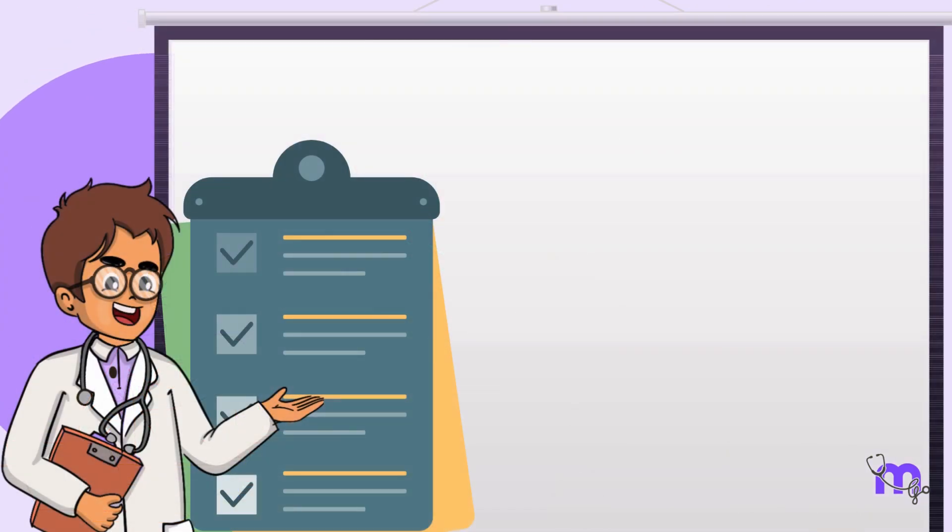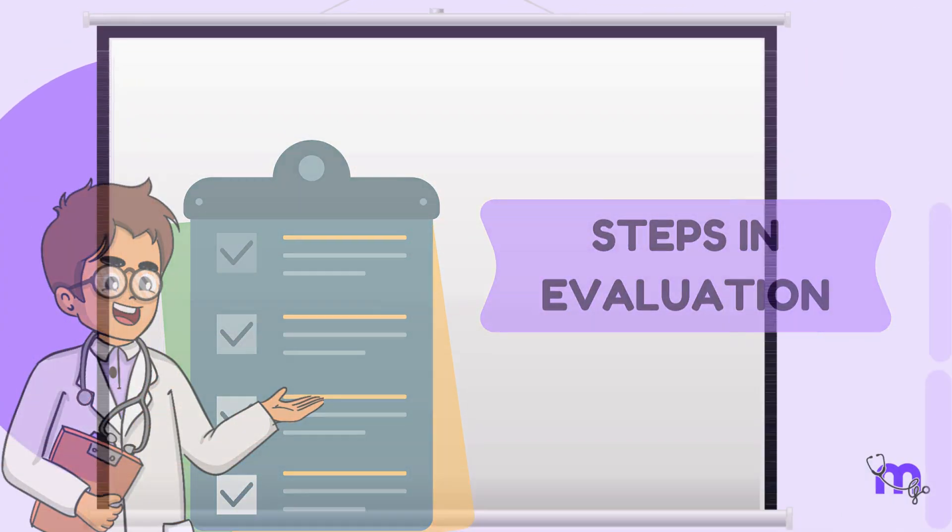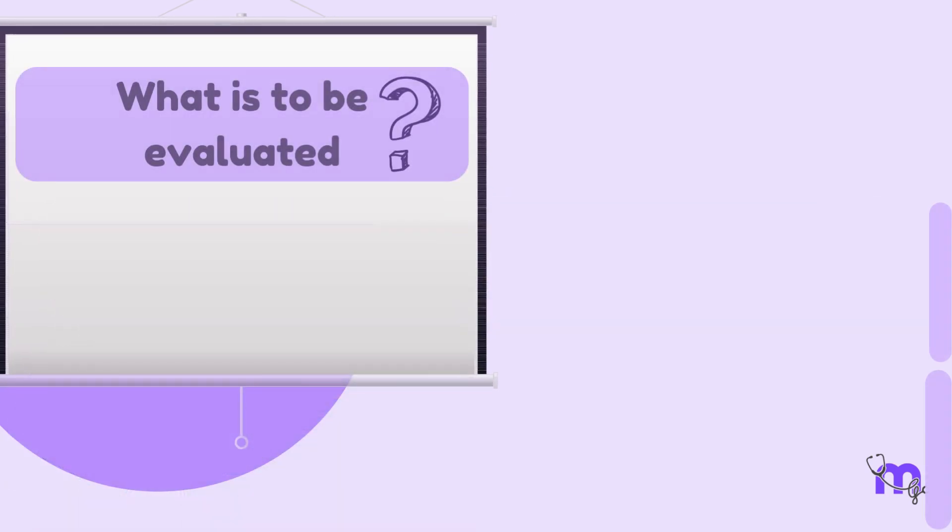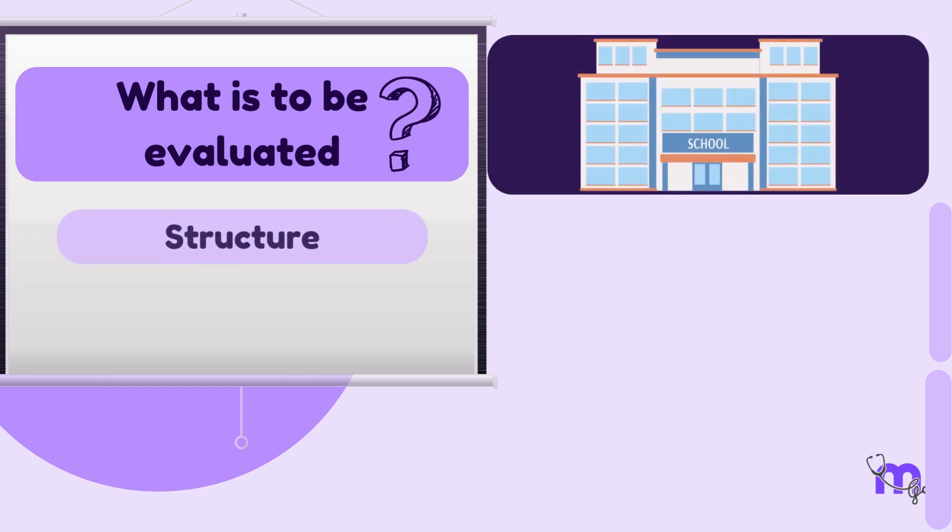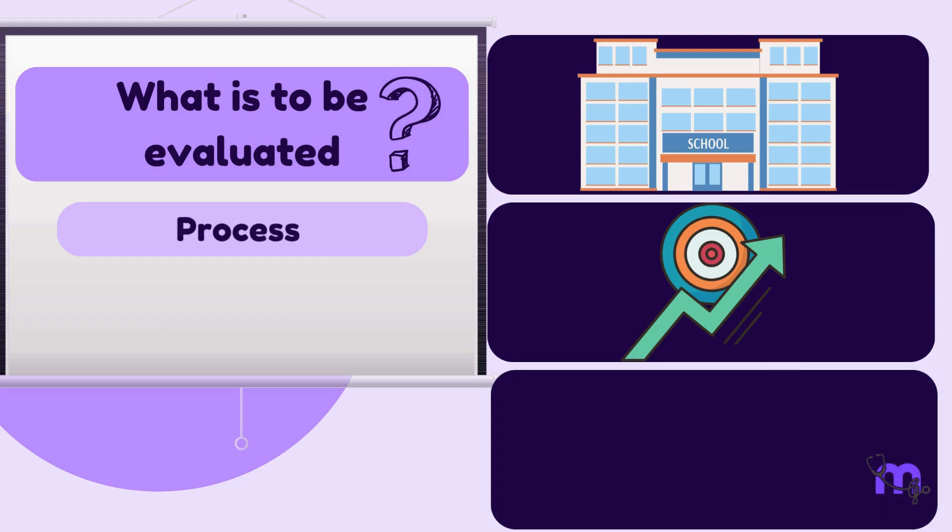Moving on, let us now discuss the steps involved in evaluating a program. The first step is to determine what exactly is to be evaluated. Here, we basically need to be clear that we have to evaluate the structure, outcome and process of the particular program in question.